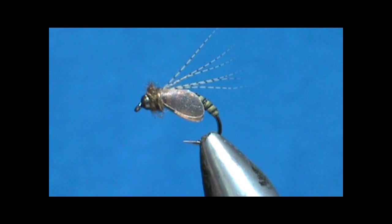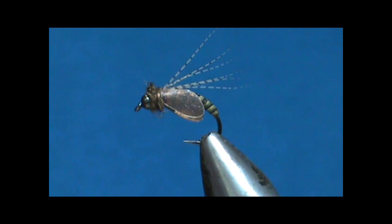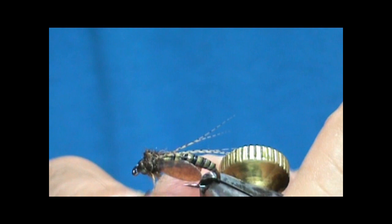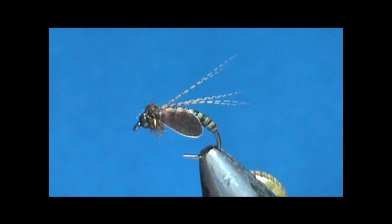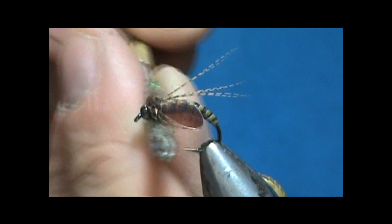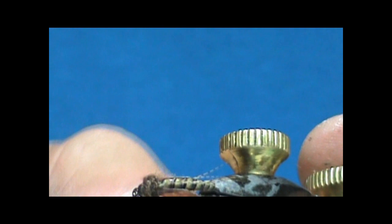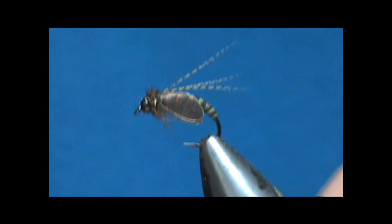Put a little bit of head cement on there. Now you can take a bodkin needle and kind of pick the bottom out just a little bit or use a dubbing brush. Pull that out just a little bit. That long one of them long hairs in there, there we go.